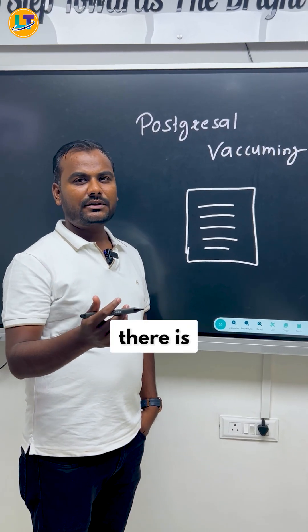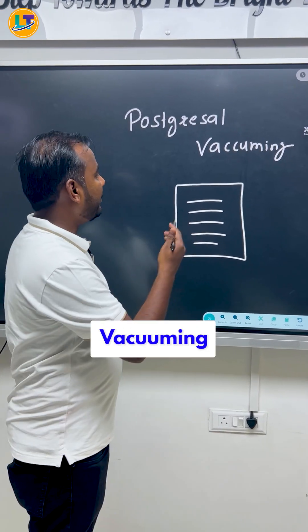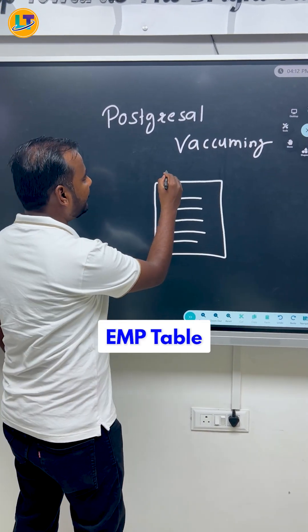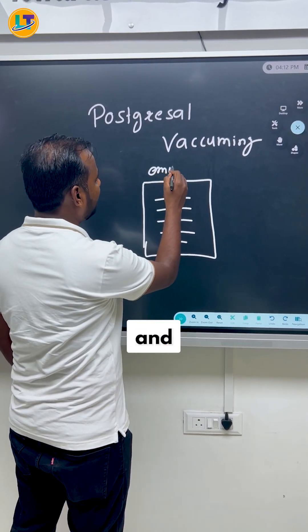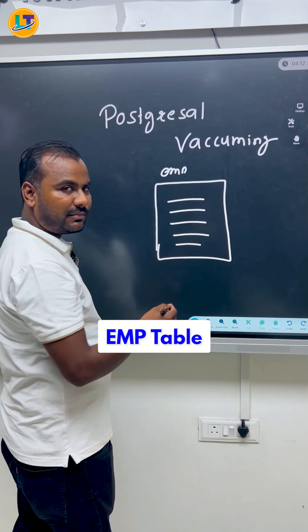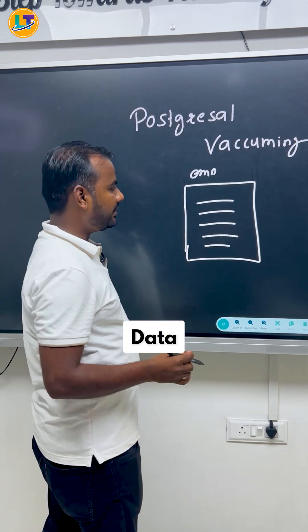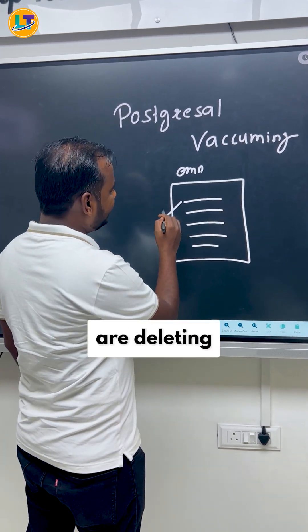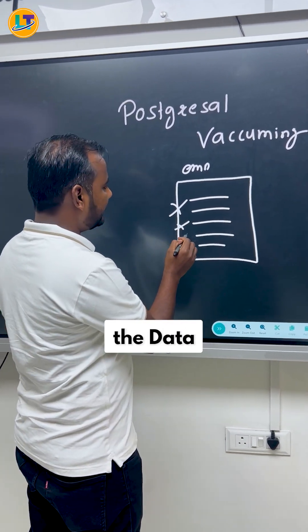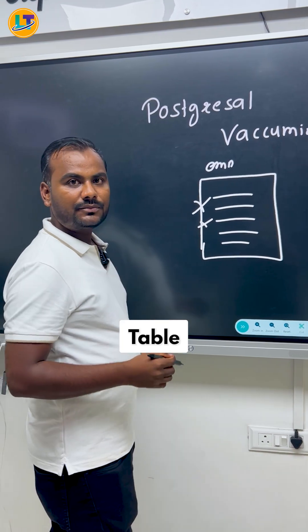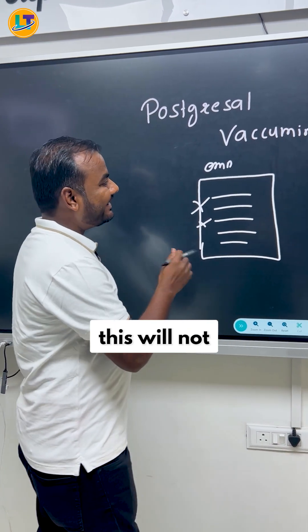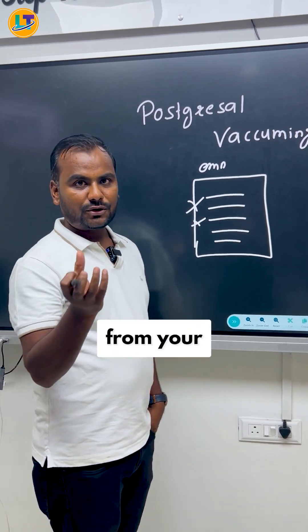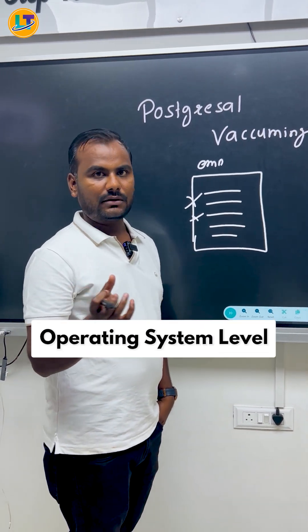In PostgreSQL, there is a concept called vacuuming. Let's say I have an EMP table and in that EMP table, I have a huge amount of data. Now, when you are deleting the data from this table, this will not release the space from your operating system level.